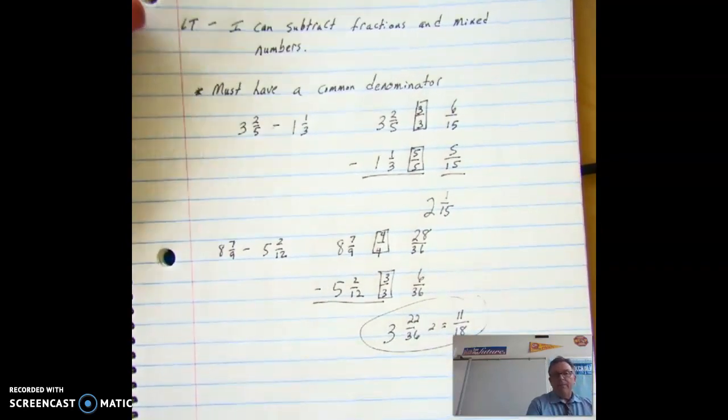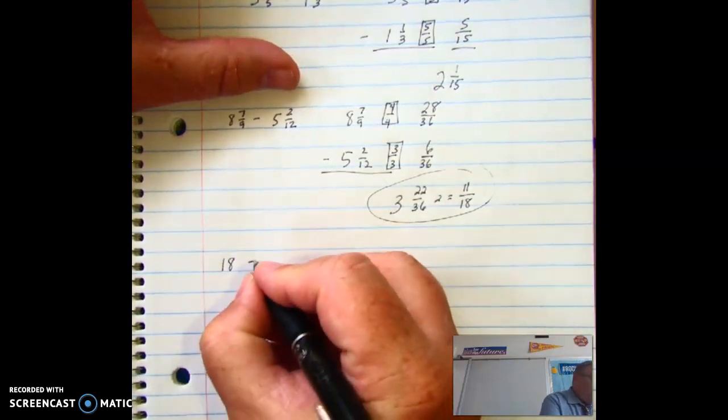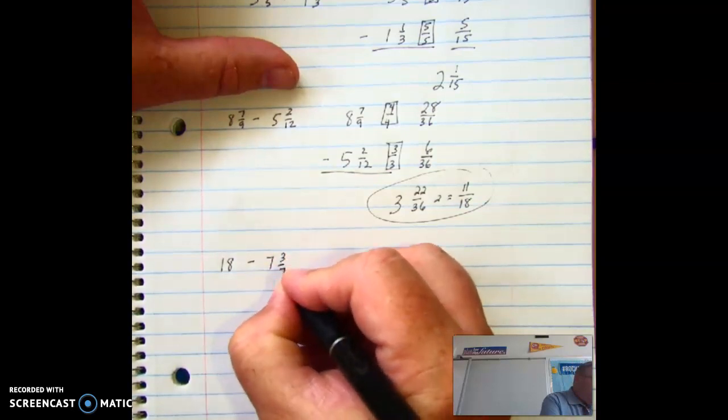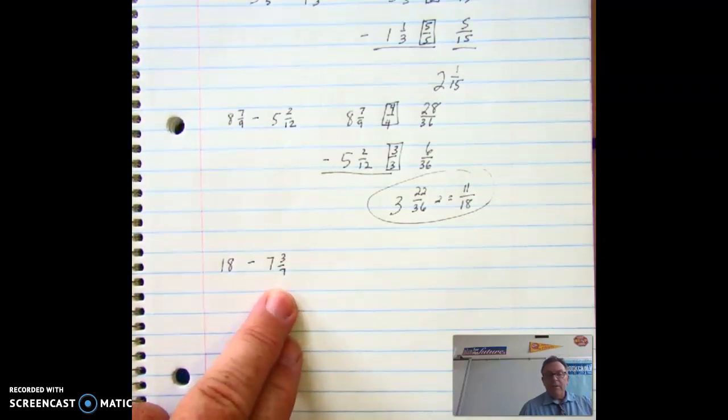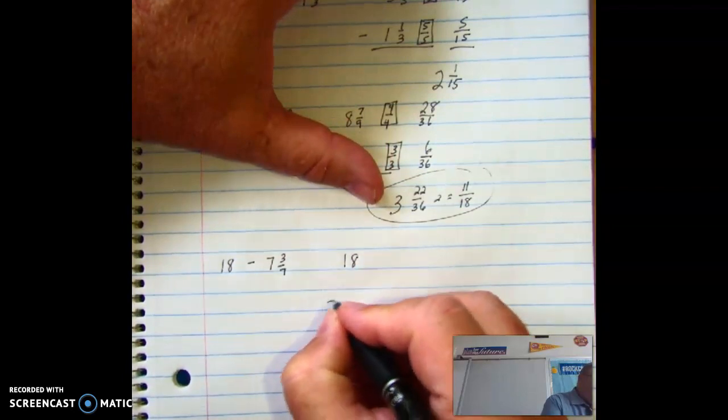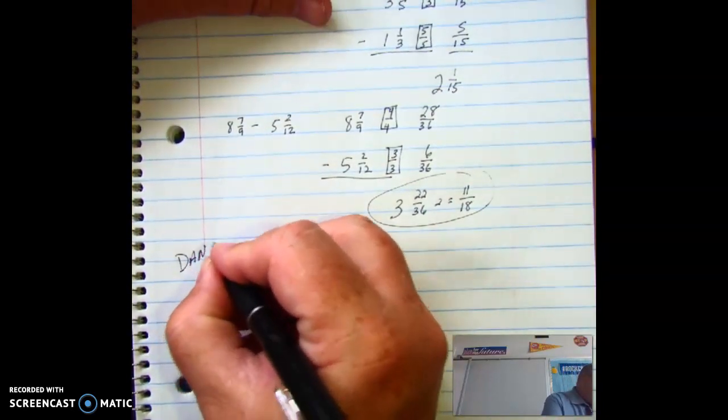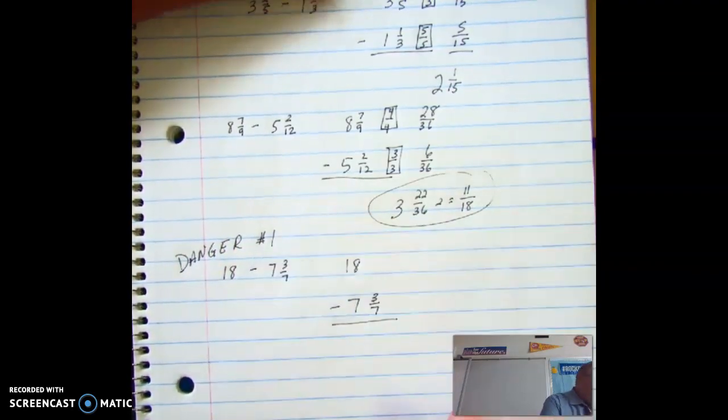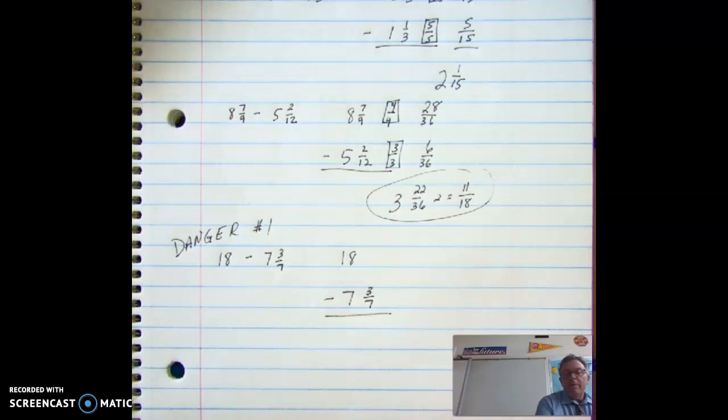Not always do things happen easily, so what we need to do now is I'm going to consider one like this. What if I had 18 minus 7 and 3 sevenths? So anything that you notice? It's a big deal in this problem that the 7 and 3 sevenths is a mixed number that has a fraction on it. 18 is only a whole number. So the first thing we're going to do is we're still going to set it up vertically. This is the problem that we like to call danger number one. And the danger in this is that the 18 doesn't have a fraction showing on it. I can't just bring this down. There's nothing to subtract it from.